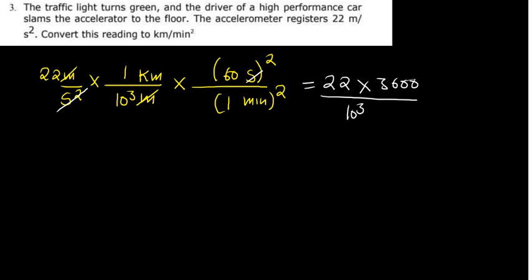The 1 stays as 1, so on top we have kilometers and down we have minute squared. We have now converted. From 1000 in the denominator, 100 cancels with two zeros, and we remain with a 10, which shifts the decimal point. You can calculate directly: 22 multiplied by 3600, then divide the answer by 1000. That gives us 79.2 kilometers per minute squared.